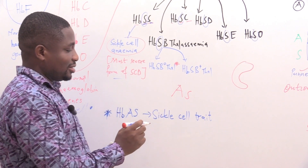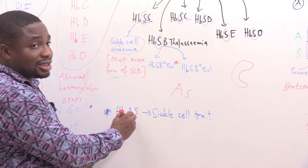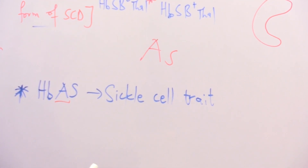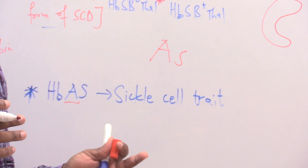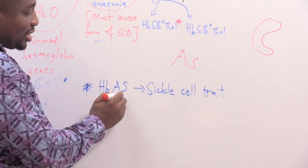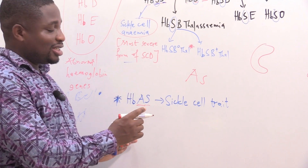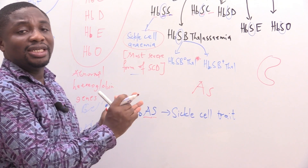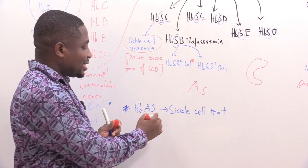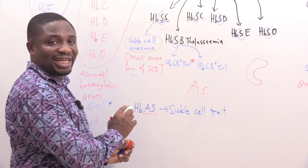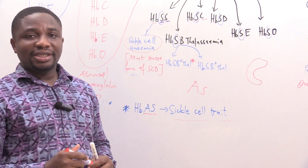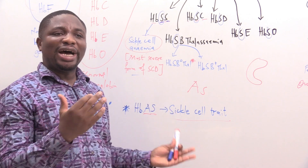If you have a combination of AS — where A is a gene coding for normal hemoglobin (HbA1, HbA2, or HbF are all normal) — and S is one abnormal gene, we cannot call this sickle cell disease because sickle cell disease requires two abnormal hemoglobin genes. Here only one is abnormal; the other is normal. When you have that combination, we call it sickle cell trait.